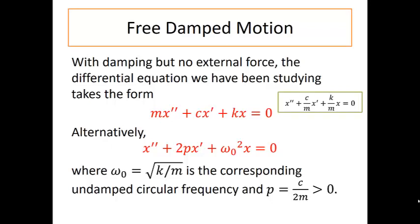If we take that original equation and just divide through by M, our equation looks like this. The C divided by M is what we're calling 2P, and the K divided by M is what we're calling omega naught squared.